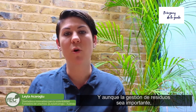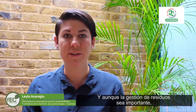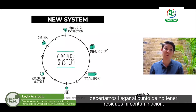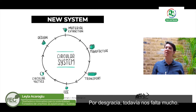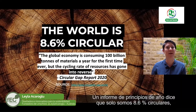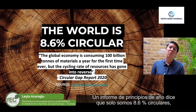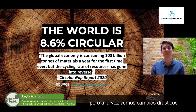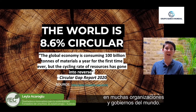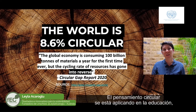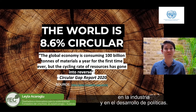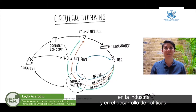Right now waste is a massive component of our unsustainable economy. Whilst waste management is a really important transition, we want to get to a point where we actually don't have waste at all, or pollution for that matter. Unfortunately we still have a long way to go. A report that came out earlier this year said that we are only 8.6% circular, but at the same time we are seeing massive changes to many organizations and governments around the world. Circular thinking is being applied to education, to industry, and of course to policy development.